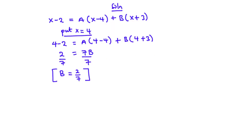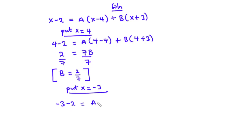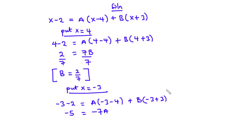Now let's find the value of a. To find a, we put x = −3 so that b goes to zero. Substituting x = −3: −3 − 2 = a(−3 − 4) + b(−3 + 3). This becomes −5 = −7a + 0. Dividing by −7, we have a = 5/7.